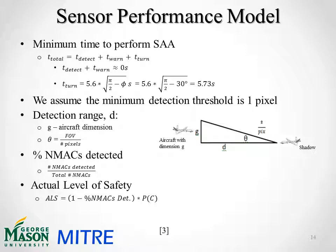Our sensor performance model proceeds in a few steps. First, we calculate the minimum time to perform a sense and avoid maneuver. The total time is comprised of time to detect, time to warn, and time to turn. Since detection is done passively, we assume it negligible, and time to warn is assumed zero since we're operating under lost link. Therefore, our equation reduces to time to turn, where phi is the maximum bank angle. With a phi of 30 degrees, we found this to be 5.73 seconds.